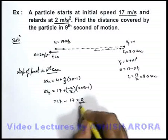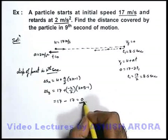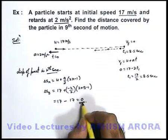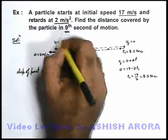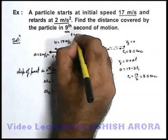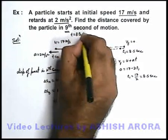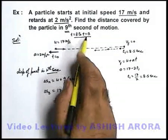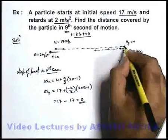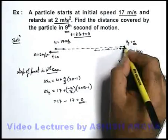Now it is quite a surprising result - how is it possible that displacement becomes zero? Yes, it is possible because we are required to analyze the motion in ninth second. So nine second will be the duration from t equal to 8 to t equal to 9 seconds of motion. This is the ninth second. We can see at 8.5 seconds the particle was at rest. It is the extreme position.